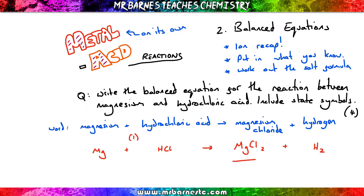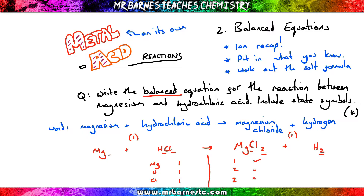You're going to get one mark for having the left-hand side Mg + HCl, and one mark for your right-hand side MgCl₂ + H₂. Then you need to balance it. On the left I've got one magnesium, one hydrogen, and one chlorine. On the right I've got one magnesium, two chlorines, and two hydrogens. So hydrogen and chlorine are not balanced — I've got one on the left, two on the right. I times everything on the left by two, putting a 2 in front of HCl. That doubles my hydrogen and doubles my chlorine, so I have a balanced equation.